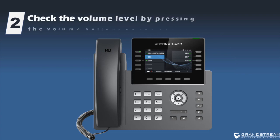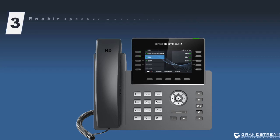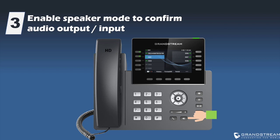During an active call, check the volume level by pressing the volume buttons on the phone to ensure the volume is not too low. If there is still no audio on the handset, you can enable speaker mode on the phone during an active call to confirm if you have audio input and output. This step is important to verify if you have a defective handset or non-functional curly cable.